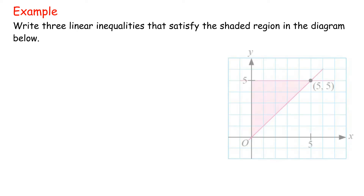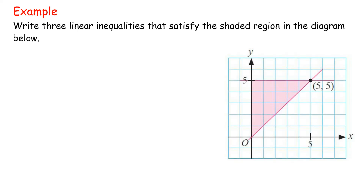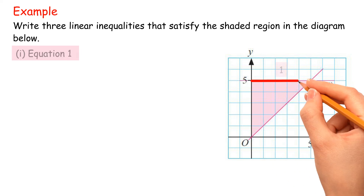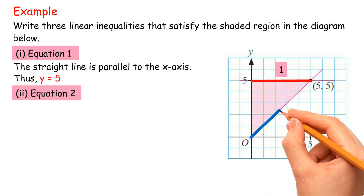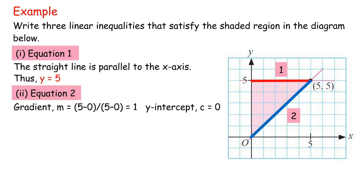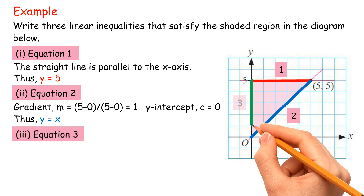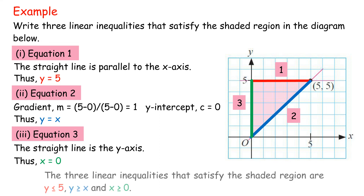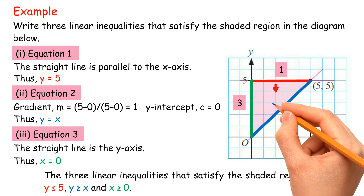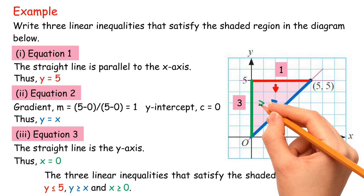Example: Write three linear inequalities that satisfy the shaded region in the diagram. 1) Equation 1: the straight line is parallel to the x-axis, thus y equals 5. 2) Equation 2: gradient m equals 5 minus 0 over 5 minus 0 equals 1, y-intercept c equals 0, thus y equals x. 3) Equation 3: the straight line is the y-axis, thus x equals 0. The three linear inequalities are y less than or equal to 5, y greater than or equal to x, and x greater than or equal to 0.